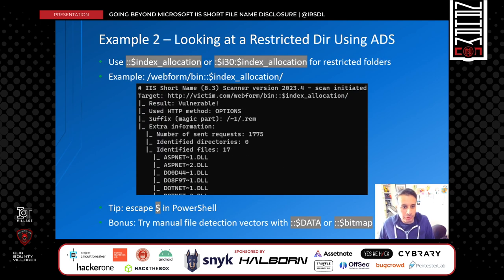As a second example, IIS can disclose short names even from a restricted path. We get an error if we try to access anything inside the bin directory directly, as we should — otherwise application source code could be disclosed. However, it is still possible to get a list of short names from the bin directory using the ::$INDEX_ALLOCATION alternate data stream or its equivalent. Although we still cannot download anything from the bin directory, it may help us understand what libraries might have been used by the website. Remember to escape the dollar sign if you're using PowerShell to run your tools. Other alternate data streams can also be useful, but there is no real benefit if you can detect the files without them.